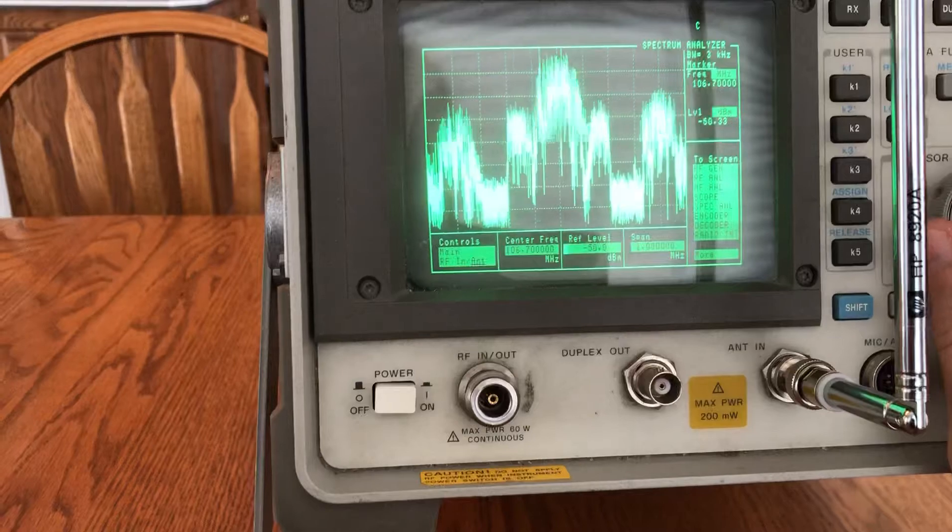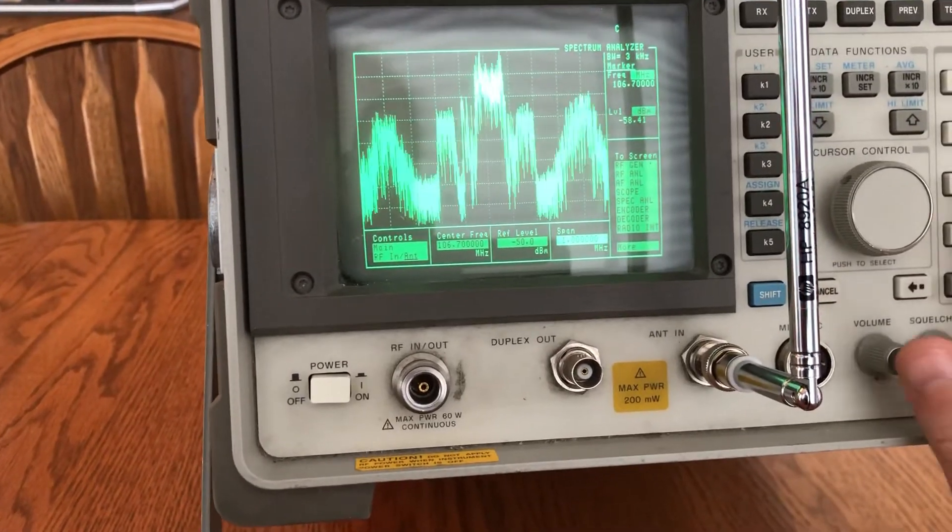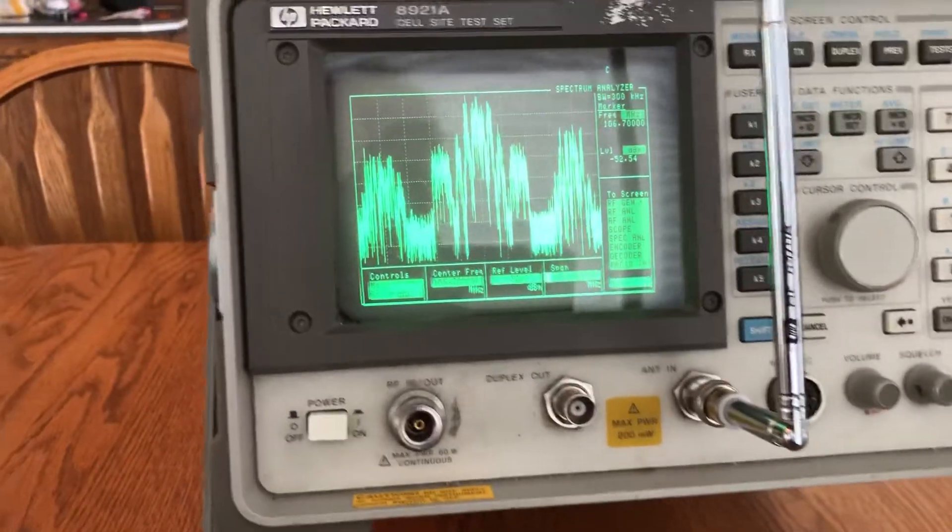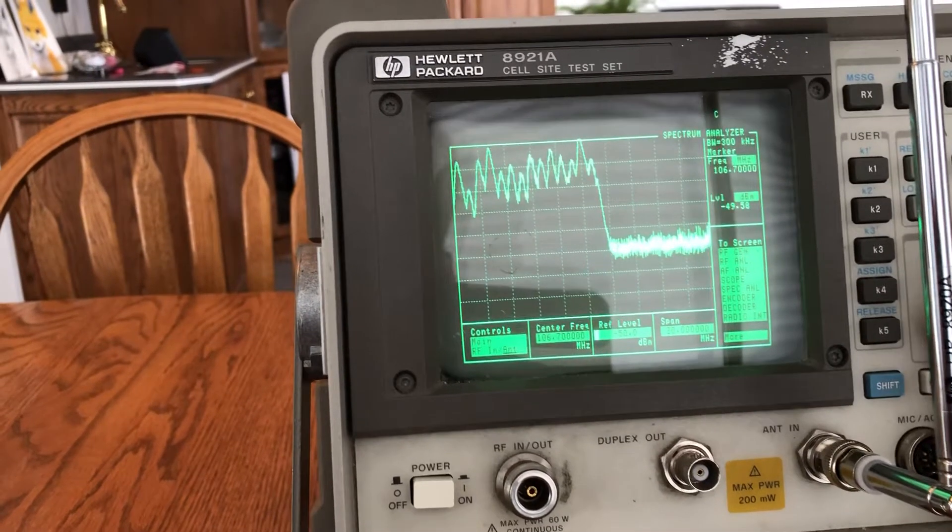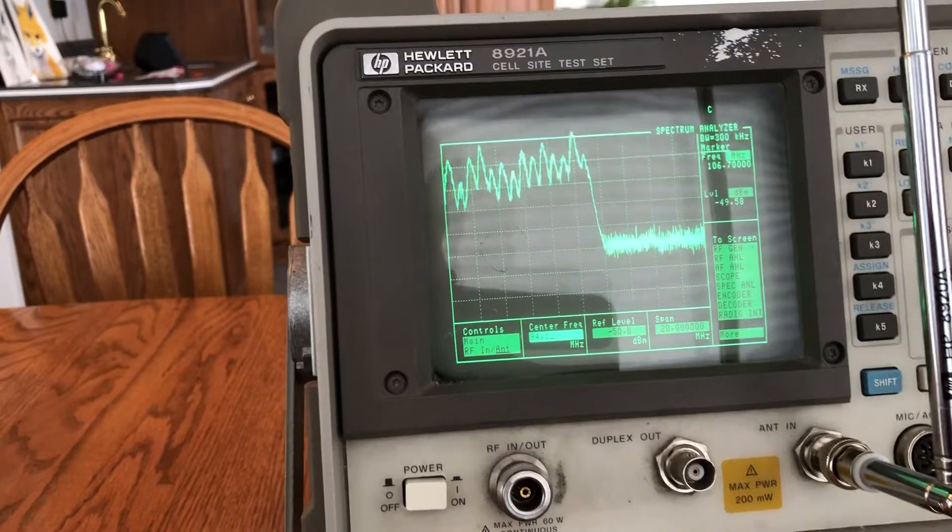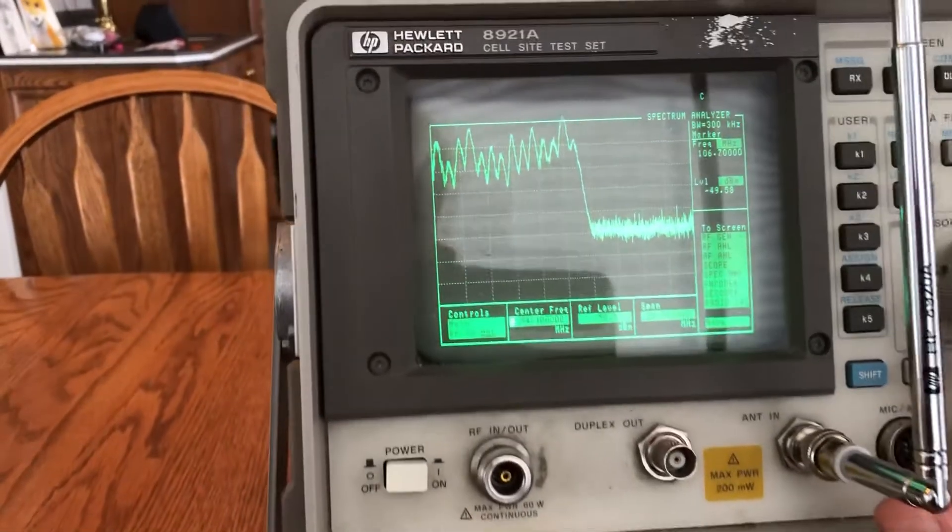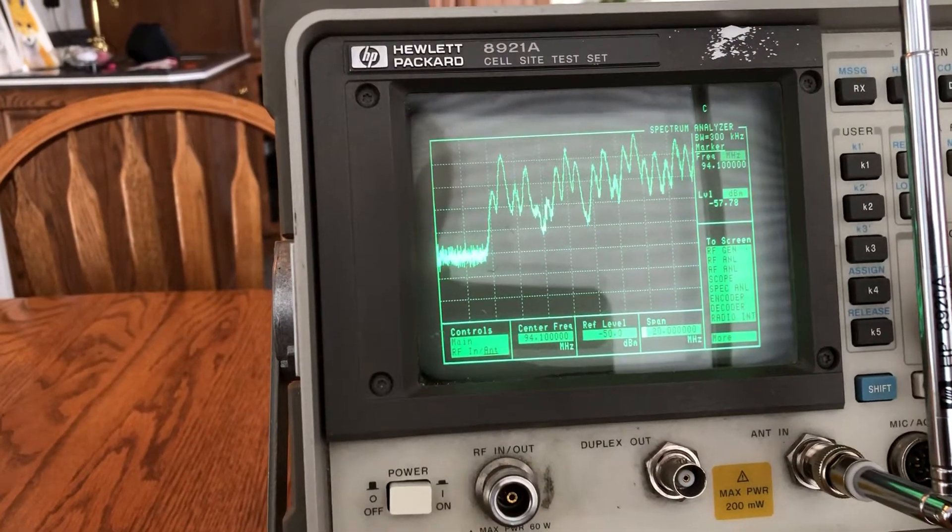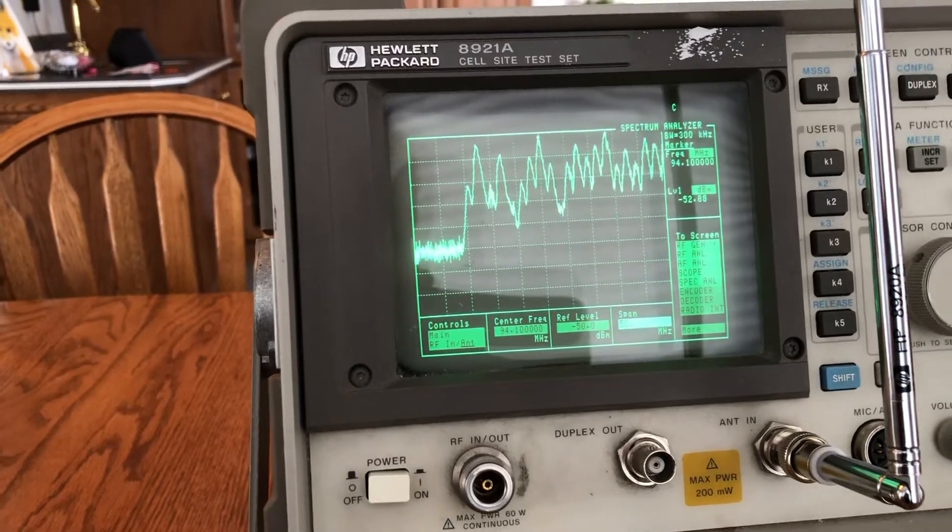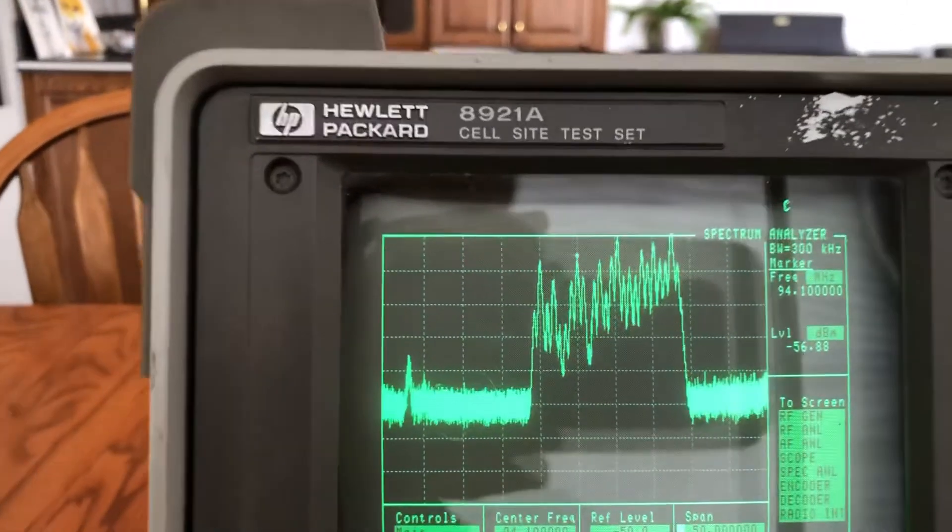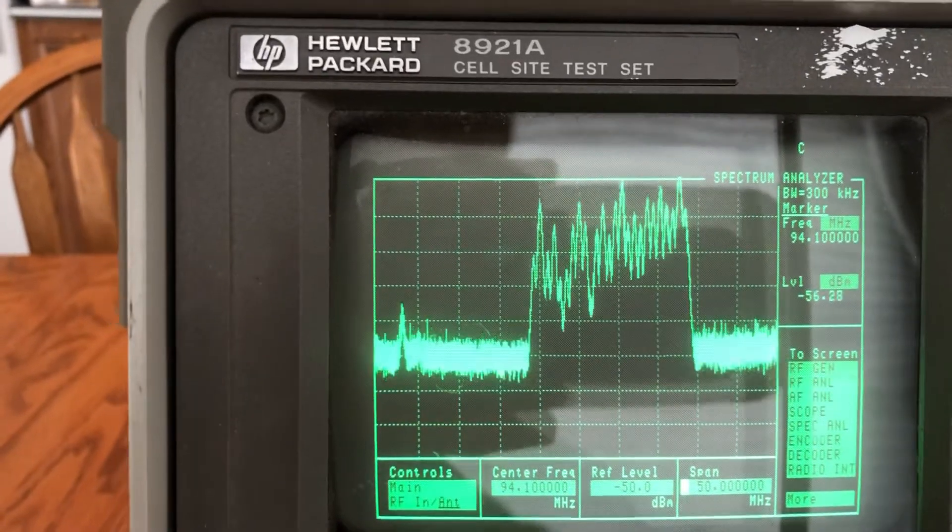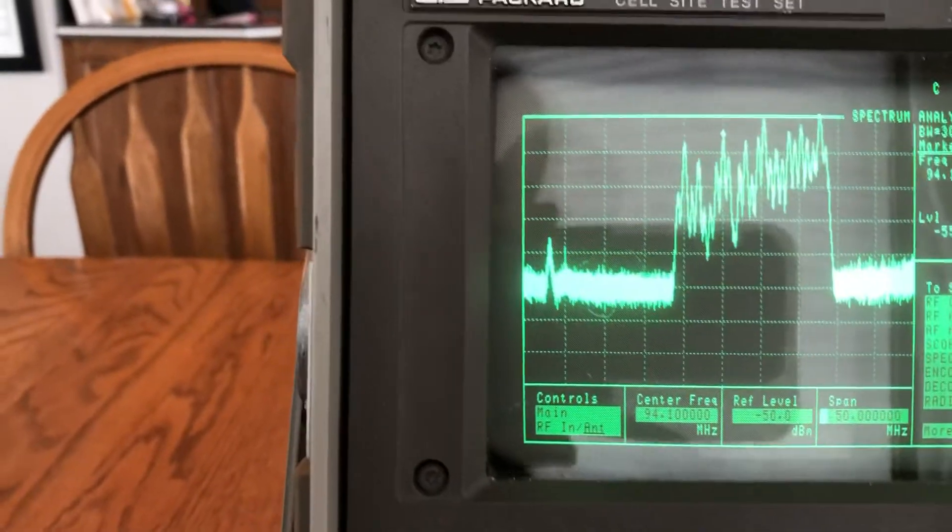One other cool thing we can do, we can change the span here to make it real big. Let's go to 20 megahertz. And let's tune to one of the lower frequencies. Let's go to like 94.1 megahertz. And let's make the span 50 megahertz. Here you can see all of the various radio stations in the area. You can see that whole band.